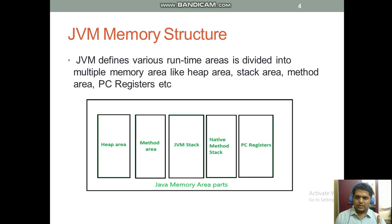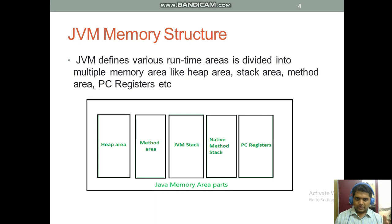The JVM memory areas include the Heap Area, Method Area, JVM Stack, Native Method Stack, and PC Register. The heap area contains heap-related memory, the method area stores method-related data, the JVM stack stores stack-related data, the native method stack stores native method operations, and the PC register is also part of this structure. These are the main Java memory area parts.